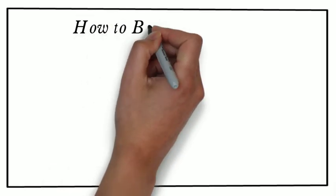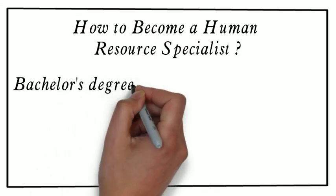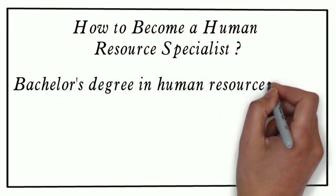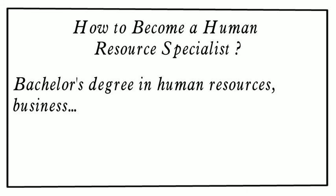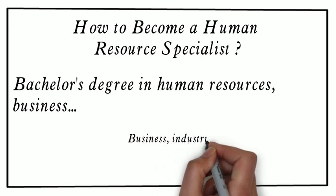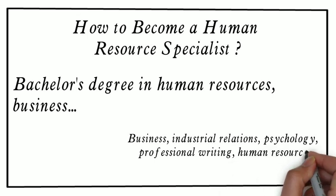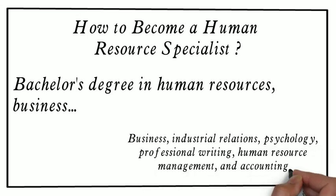How can you become a Human Resource Specialist? Applicants seeking positions as a Human Resources Specialist usually must have a Bachelor's Degree in Human Resources, Business, or a related field. Coursework typically includes business, industrial relations, psychology, professional writing, human resource management, and accounting.